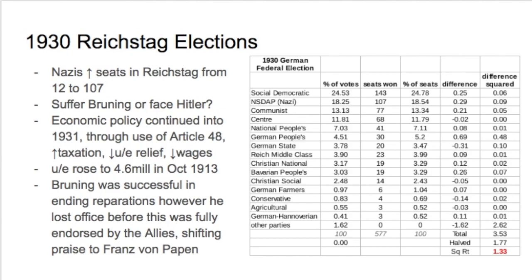It's really a big question: do we suffer Brüning's economic policy or do we face the radicalism of Hitler? Economic policy continued through 1931 through the use of Article 48, with more increases in taxation, unemployment relief plummeting, wages decreasing, and unemployment continuing to rise — by October 1931 reaching 4.6 million. Brüning was successful in ending reparations, however he lost office before this was fully endorsed by the Allies, losing his shining moment of glory.